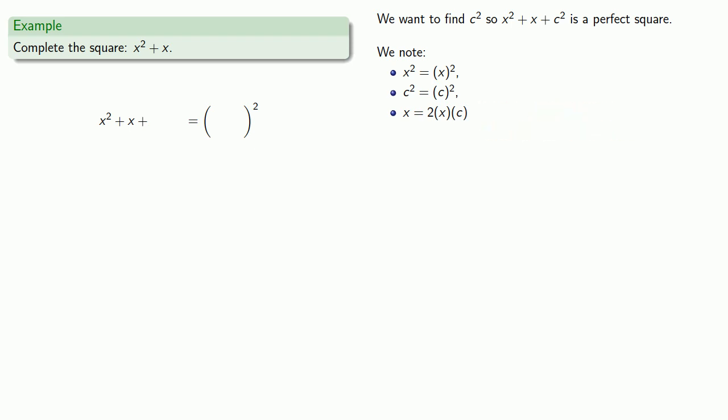And so we can solve for c. We'll rearrange terms a little bit. And so we want 1 times x to be the same as 2c times x. And so that means 1 is equal to 2c. And so c itself is equal to 1 half. And so that says if we add 1 half squared to x squared plus x, we're going to get a perfect square, namely the square of x plus 1 half.